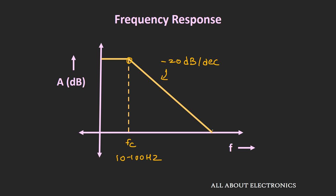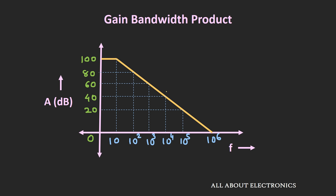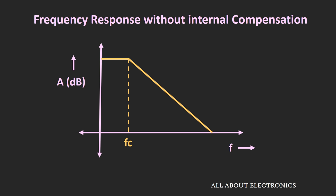The frequency where the gain of the op-amp is unity is known as the unity gain frequency. Because of this kind of response, we can predict the gain of the op-amp at any given frequency, or conversely, if we know the gain of the op-amp we can predict the frequency of operation. This is particularly useful when we are using the op-amp in a closed-loop configuration. Now if the op-amp is not internally compensated, you can have multiple break frequencies until the gain reaches the unity gain frequency, caused by stray capacitances and load capacitances, which would make the op-amp unstable at very high frequencies.